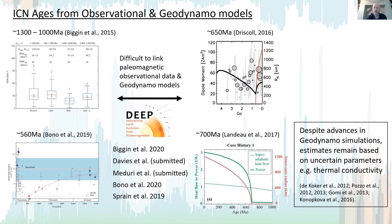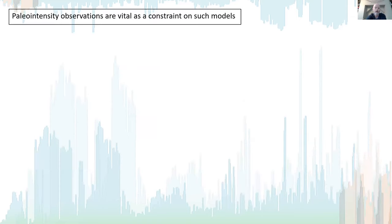An important caveat is that despite significant advances in geodynamo simulations, estimates remain based on uncertain parameters such as thermal conductivity. This is why paleointensity observations are vital as a constraint on these models.